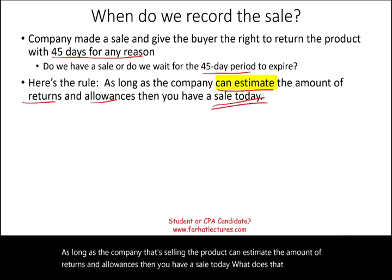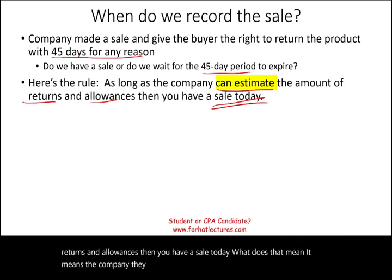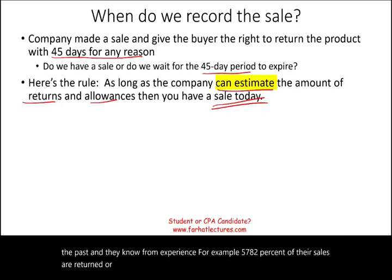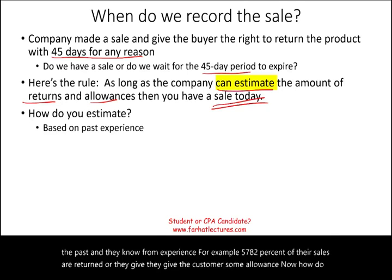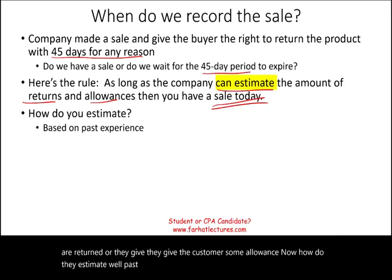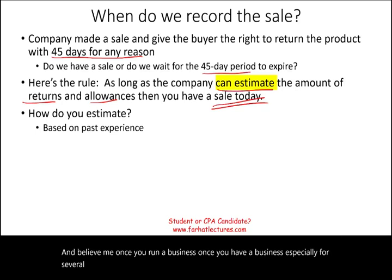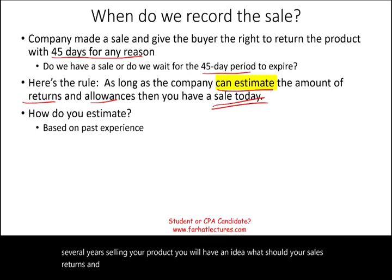Here's the rule — very simple. As long as the company that's selling the product can estimate the amount of returns and allowances, then you have a sale today. That means the company has experience; they've made similar sales in the past and they know from experience that, for example, five, seven, or eight percent of their sales are returned or they give the customer some allowance. How do they estimate? Past experience. Once you run a business for several years selling your product, you will have an idea what your sales returns and allowances should be. You may not be 100% accurate, but you can estimate.